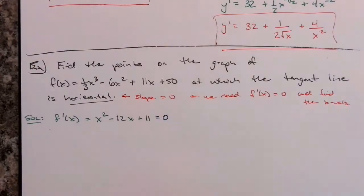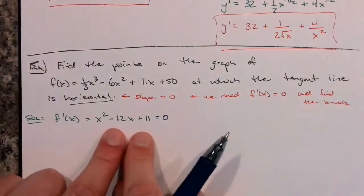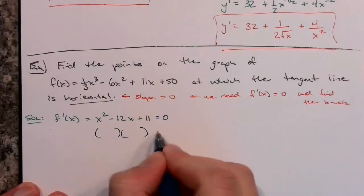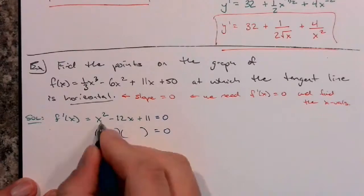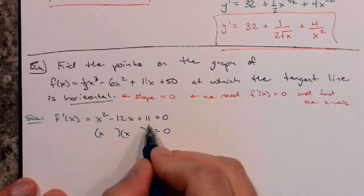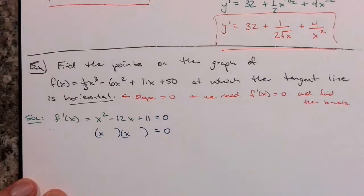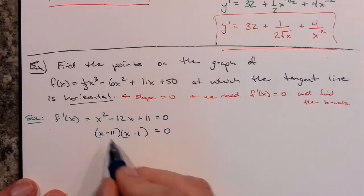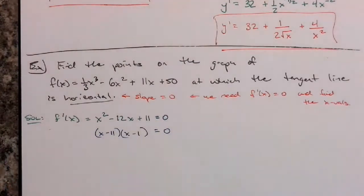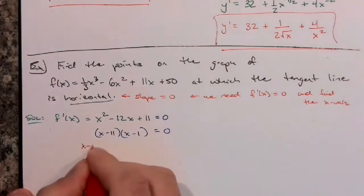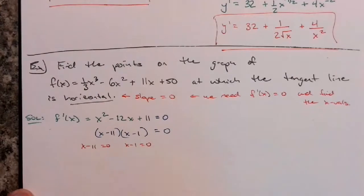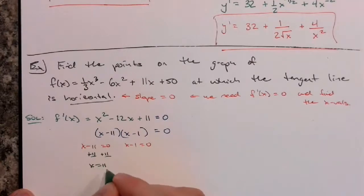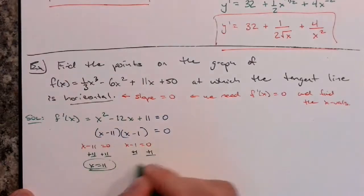We're going to solve x² - 12x + 11 = 0. This is a quadratic, and we want to try to factor it. You want things that multiply to 11 and add to negative 12. Numbers that do that are negative 11 and negative 1: negative 11 times negative 1 gives positive 11, and negative 11 plus negative 1 gives negative 12. So we get (x - 11)(x - 1) = 0. Setting each factor equal to 0: x = 11 and x = 1.